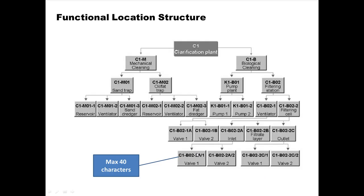The thing that identifies a functional location is called the structure indicator. It can be a maximum of 40 characters in SAP. Just by looking at the structure indicator for a functional location, you can immediately find out exactly where it is — for example, that it is under C1, under biological cleaning, under filtering station, and so on. It is a very succinct indication of where in the hierarchy a particular functional location fits.